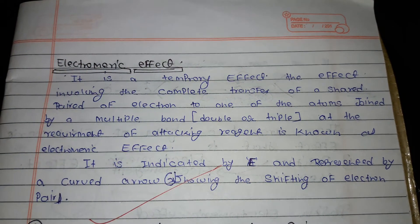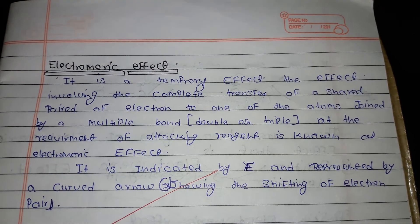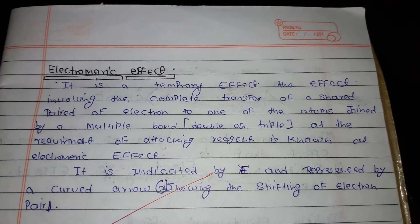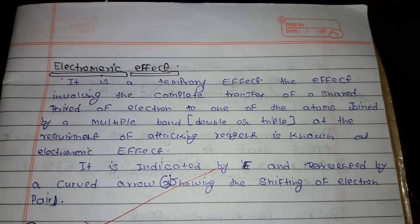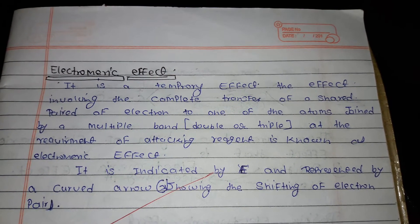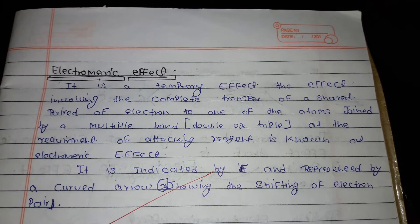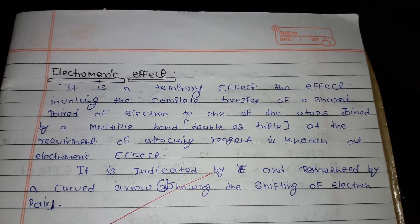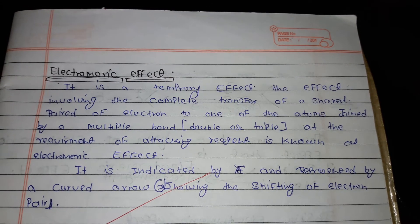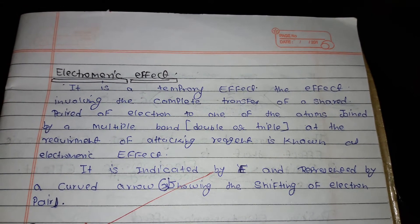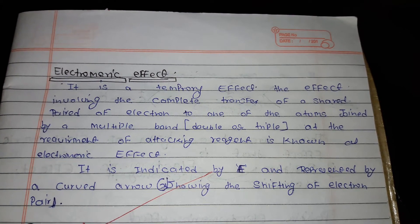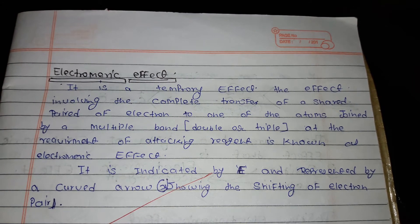Hello, my name is Shivaji and today we learn in organic chemistry the electromeric effect. The electromeric effect is defined as a temporary effect that involves the complete transfer of a shared pair of electrons to one of the atoms joined by a multiple bond, at the requirement of an attacking reagent. It is indicated by E and represented by a curve arrow showing the shifting of electrons.